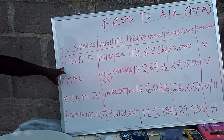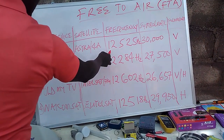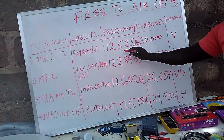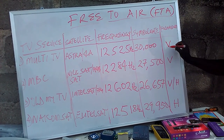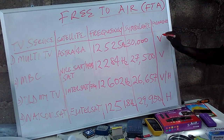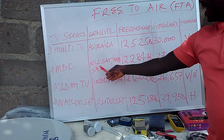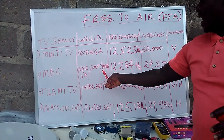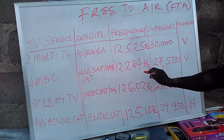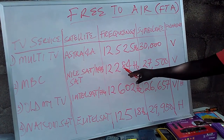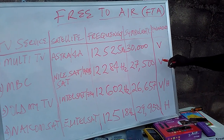The Multi-TV, like I explained earlier, has this as its satellite: Astra 4A. The frequency is 12,525 Hz. The symbol rate is 30,000. The polarization is vertical. Then we have the MBC. The MBC's satellite is the 9SAT or ArabSat. The frequency is 12,284 Hz. The symbol rate is 27,500. The polarization is vertical.